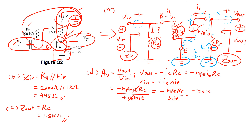If we substitute the values: AV equals minus 120 times 1.5 kilo-ohms over 1 kilo-ohm, giving a gain of minus 180. That's the voltage gain for this common emitter amplifier.